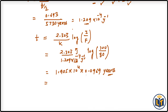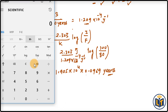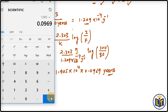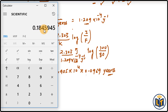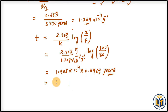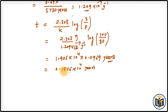Multiplying the values: 1.905 × 0.0969 gives approximately 0.1846. So T = 0.1846 × 10⁴ years. Since there is a decimal before four digits and we have 10 to the power 4, the final value is approximately 1846 years. This is the age of the sample for carbon-14.